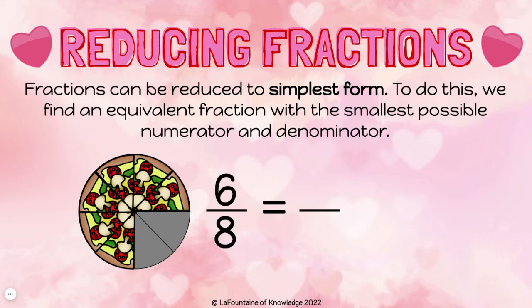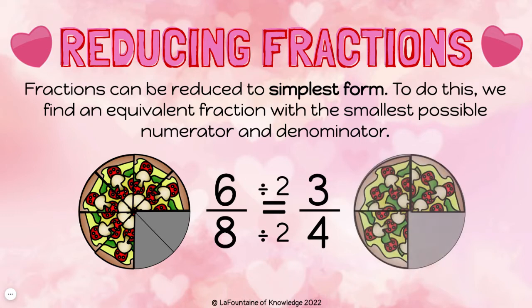If we divide them both by two we will have this fraction in simplest form. Six divided by two is three and eight divided by two is four. So six eighths is equivalent to three fourths. If I wanted to write six eighths in simplest form it would be three fourths. When we look at the pictures we can see they're the same amount of pizza — it's just cut into different size slices.